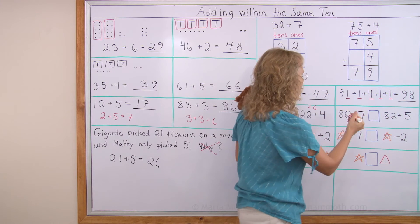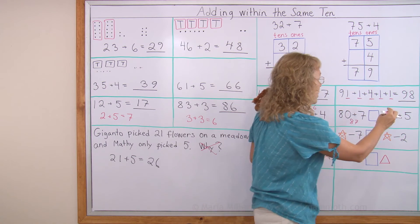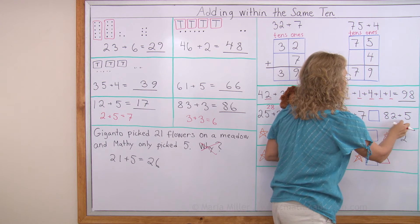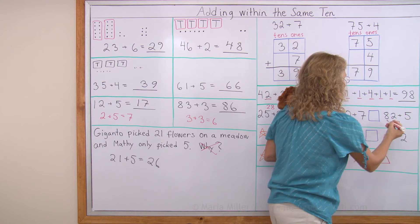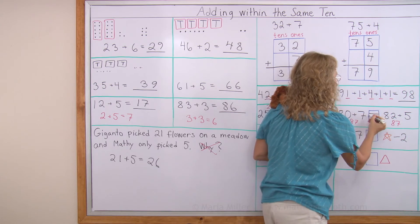Here. 80 plus 7. Oh that's easy. That's 87. 82 plus 5. 2 plus 5 is 7. 87. 87. So then it means we put equals.